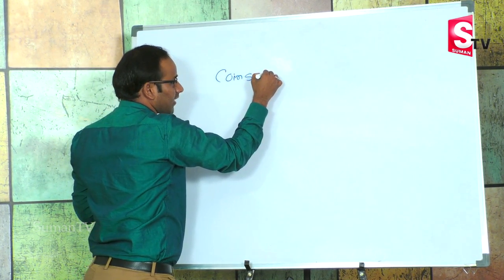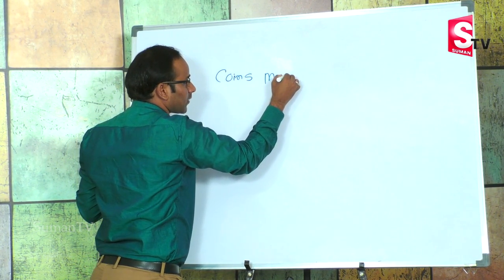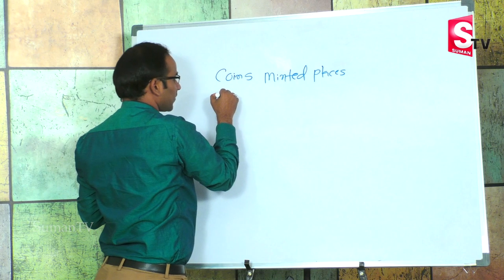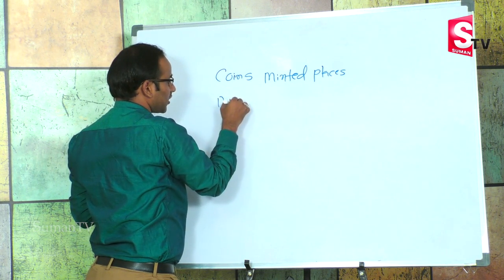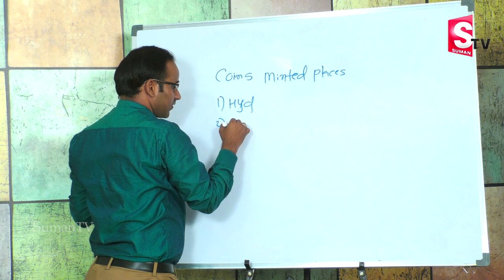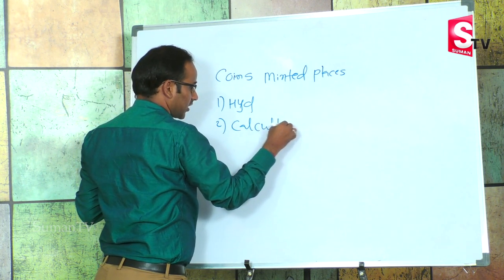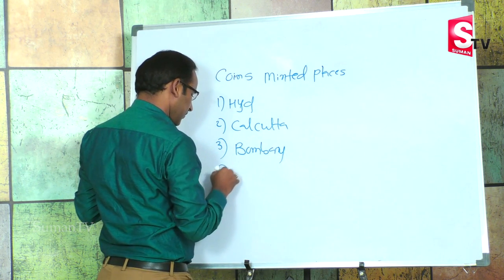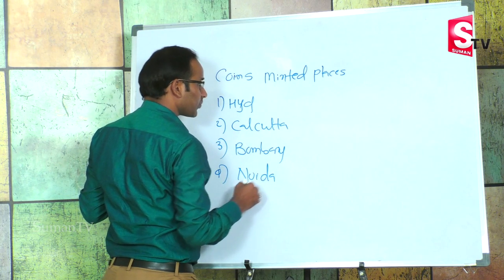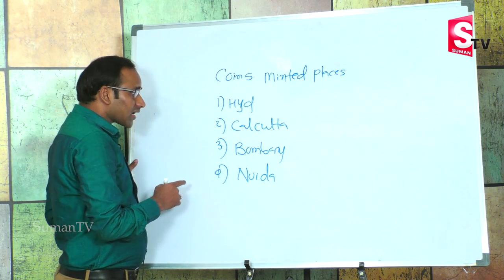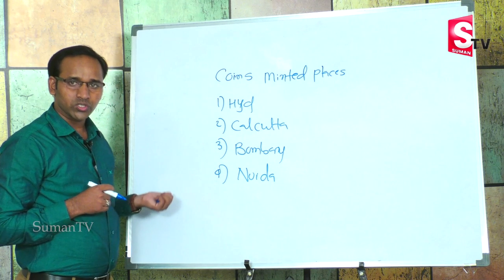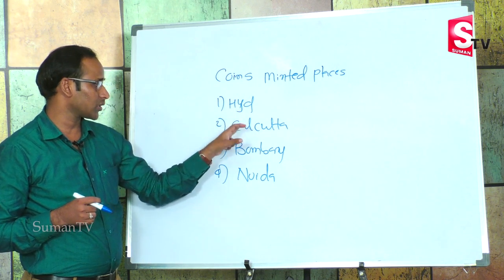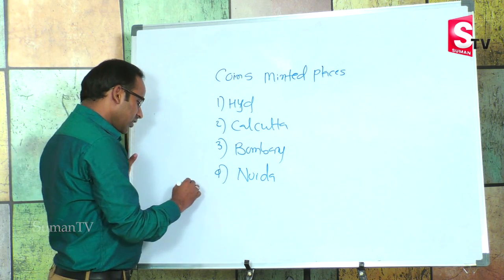The coins minting places in India are: Hyderabad, Kolkata, Mumbai (Bombay), and Noida. The currency printing places are Mysore, Salboni, Dewas, and Madhya Pradesh. So coins minting places and currency printing places are different. Coins: Hyderabad, Kolkata, Mumbai, and Noida.